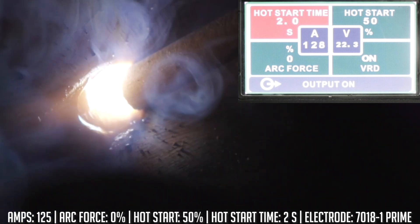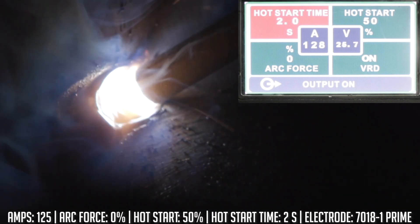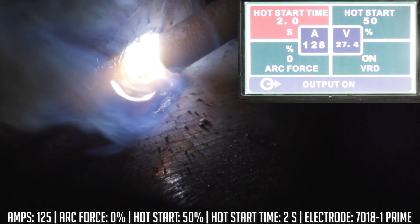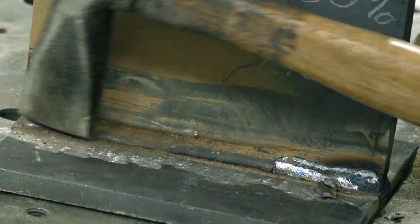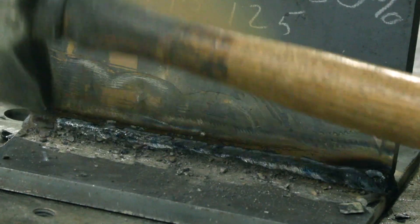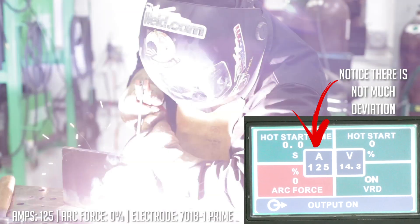Play around with it if your machine's capable of doing it. This machine performed really well so far. I'm liking the way these rods are running, everything's pretty smooth. Let's go ahead and start playing around with arc force. What we're gonna do now is drop our hot start down to zero and play with the arc force.